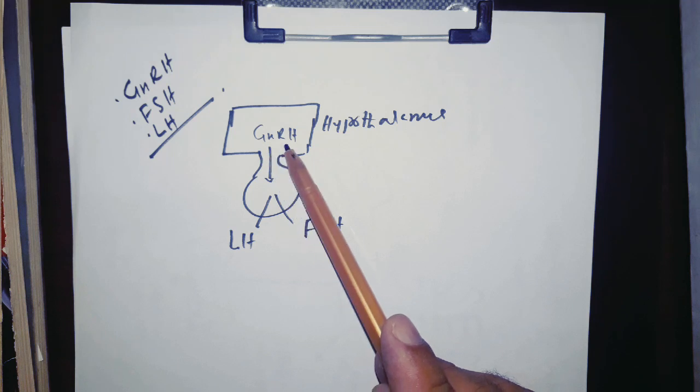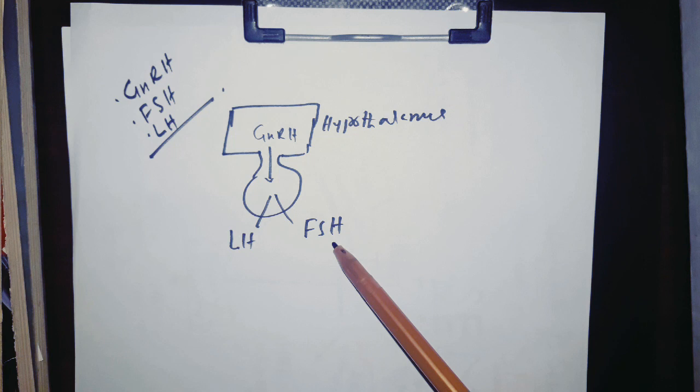The secretion of gonadotropin-releasing hormone stimulates the secretion of luteinizing hormone and follicle-stimulating hormone from anterior pituitary.